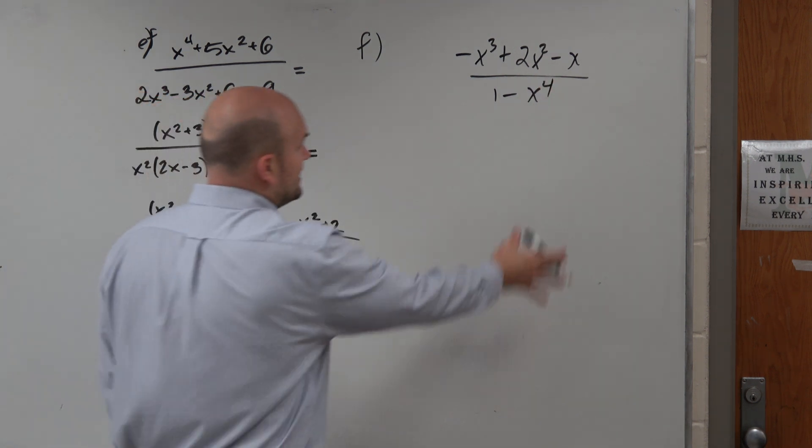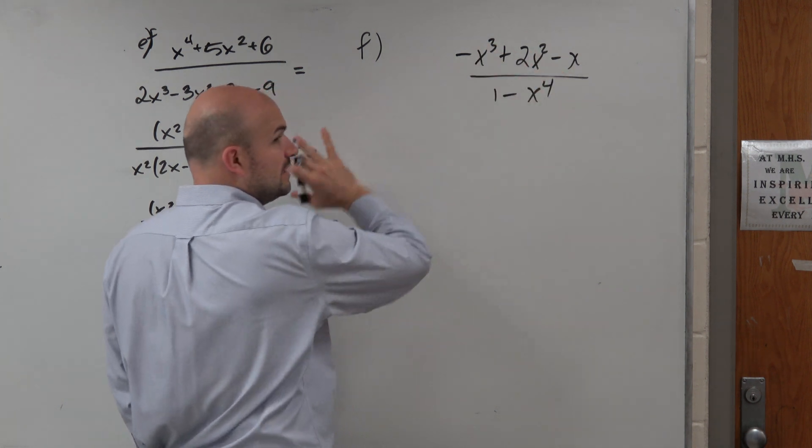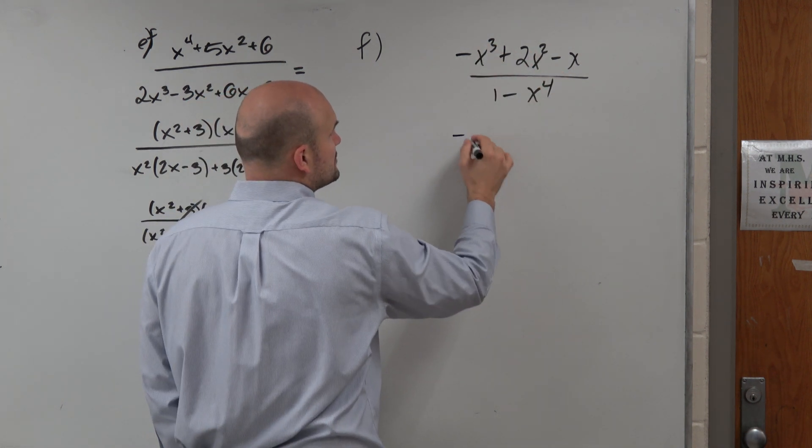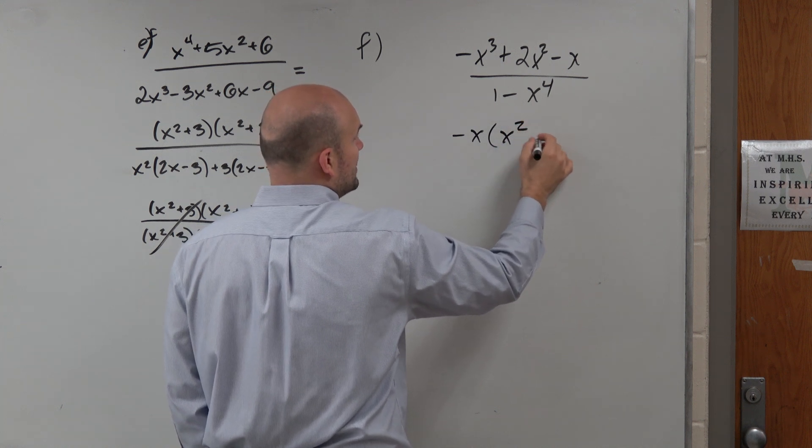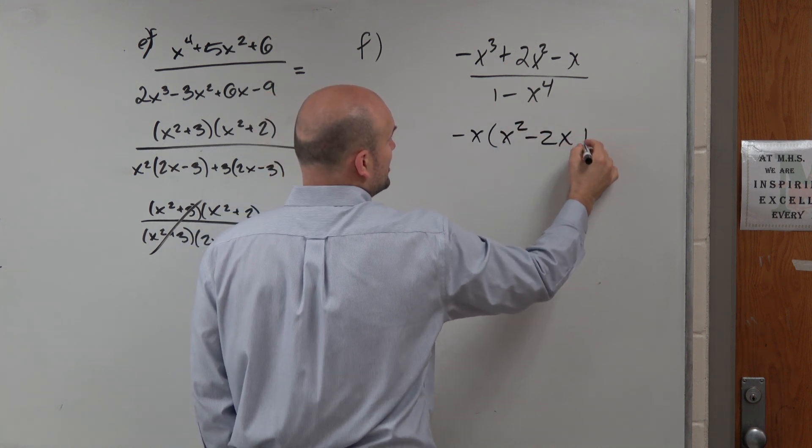So the first thing I would do is factor out an x as well as factor out a negative. If I factor out a -x, that's going to leave me with x² - 2x + 1.